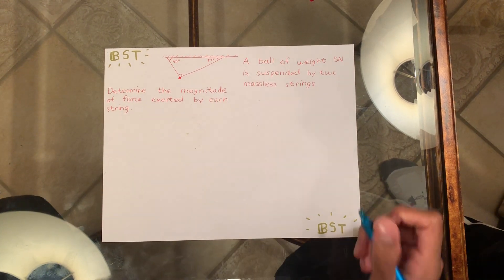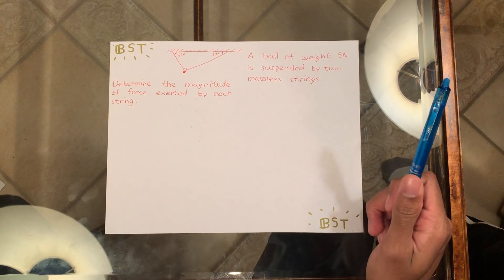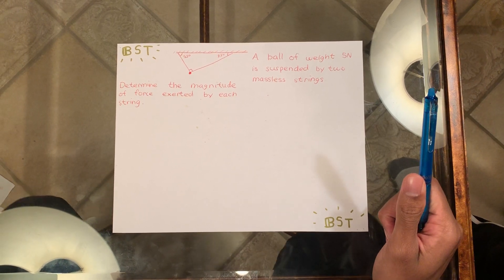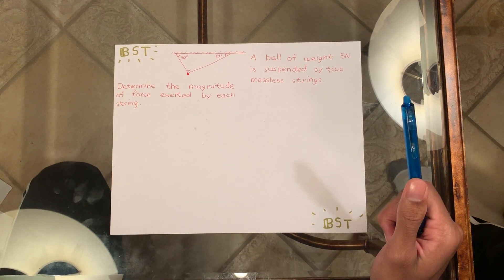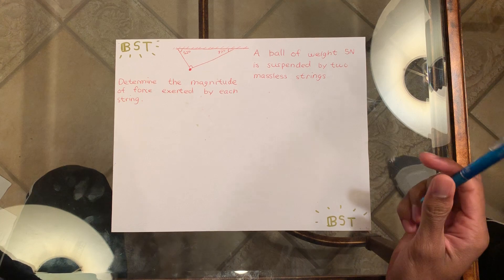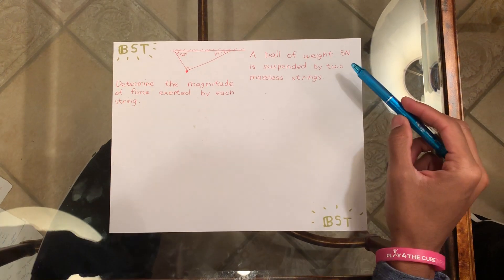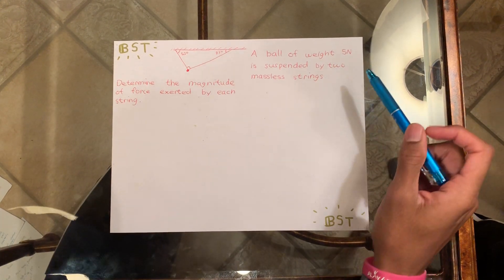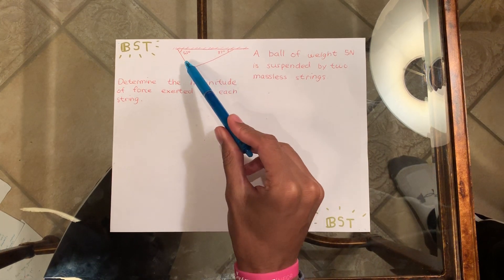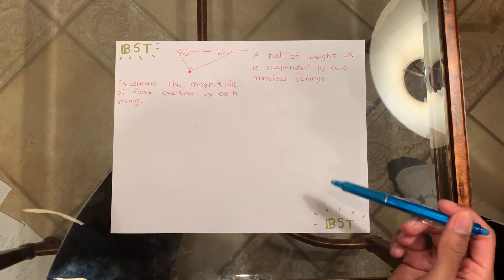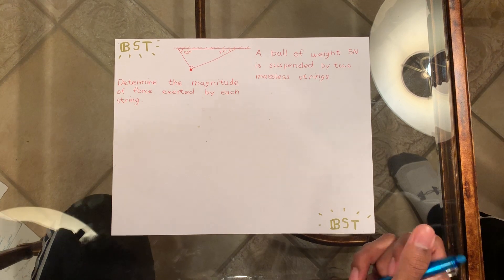Hello, I'm a bullet student tutor and this is a lesson on how and when to rotate axes on a physics free body diagram. Let's start with the problem. A ball of weight 5 Newtons is suspended by two massive strings as shown right here. Determine the magnitude of force exerted by each string.